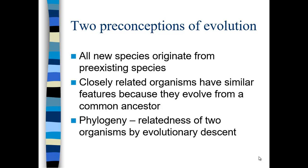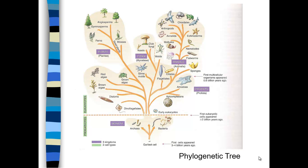Phylogeny is the relatedness of two organisms based on evolutionary descent. It's all based on molecular genetics now, looking at the sequence differences between the small subunit of ribosomal RNA — the 16S portion of ribosomal RNA. If you look at the phylogenetic tree, you can see the different domains.